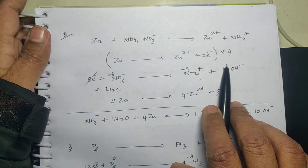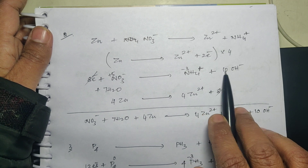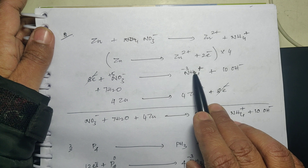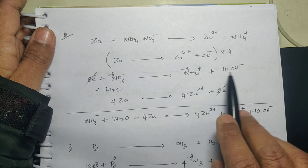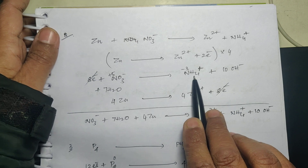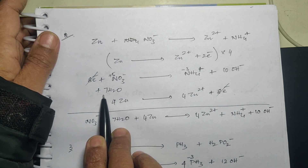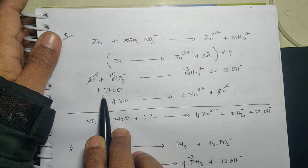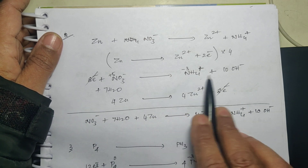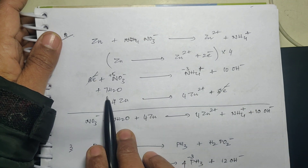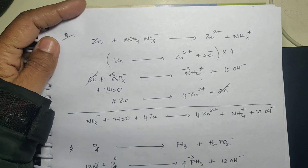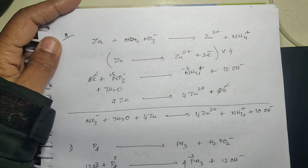Now this 10 OH⁻ gives you 10 hydrogen atoms, and there are already 4 hydrogen atoms on the product side, so 10 plus 4 = 14 hydrogen atoms. To compensate 14 hydrogen you add 7 water. If there is any other hydrogen already present, you must count along with it when compensating in the form of water — you have to be very careful.